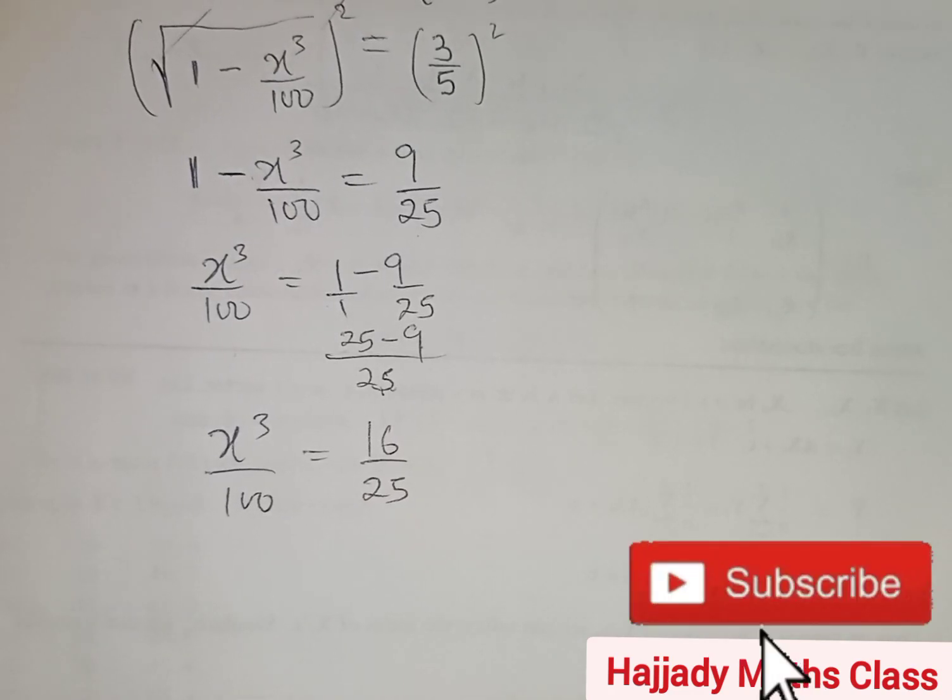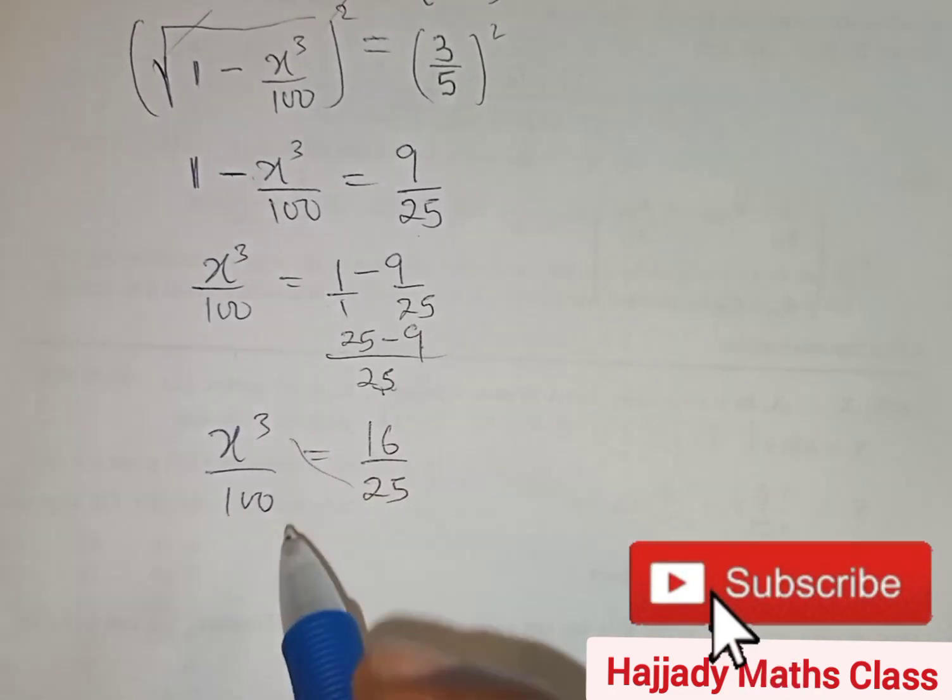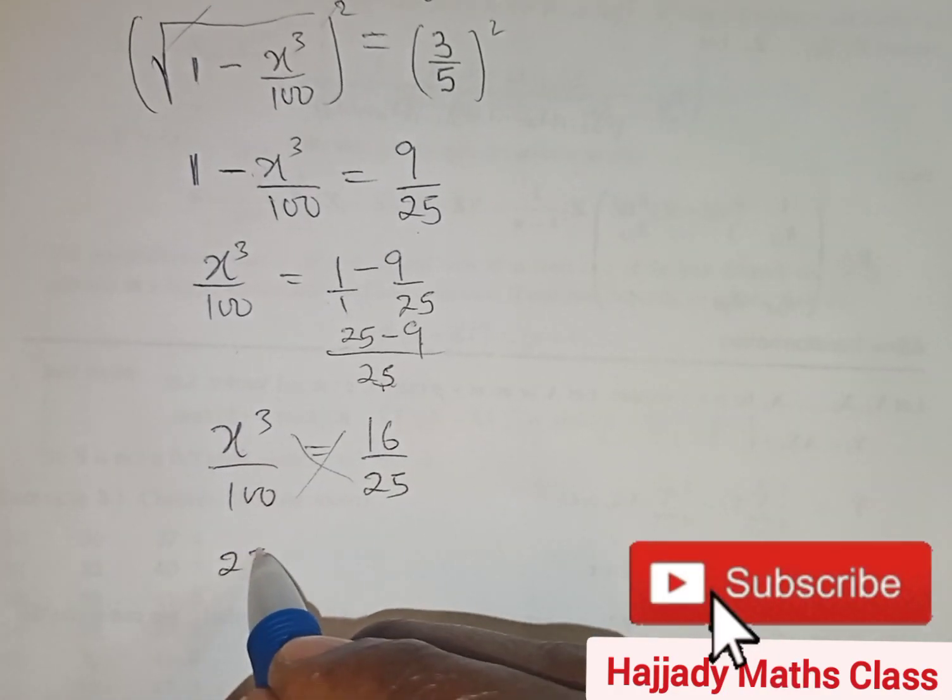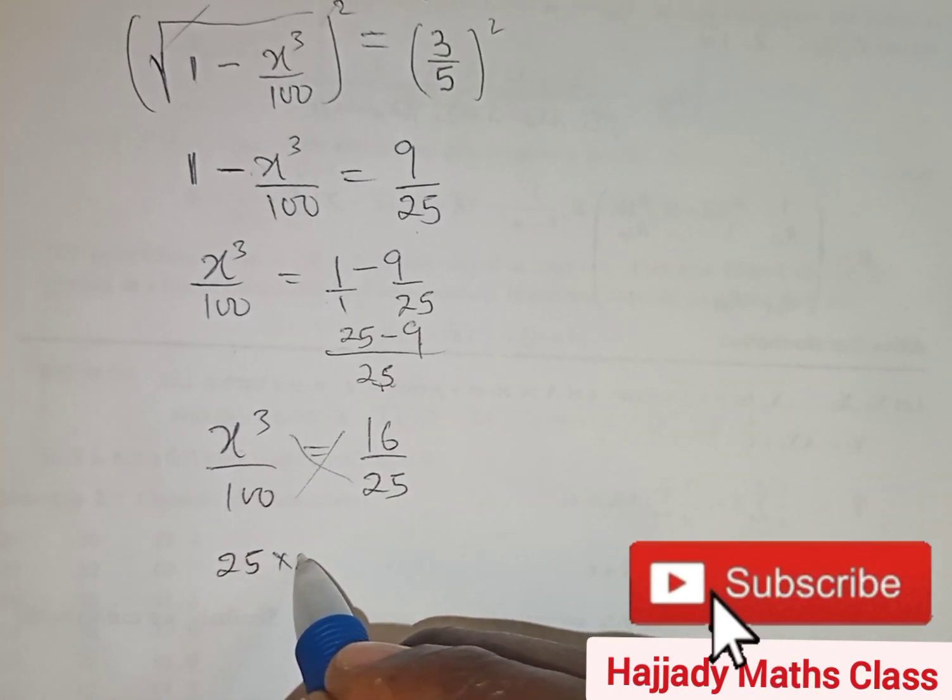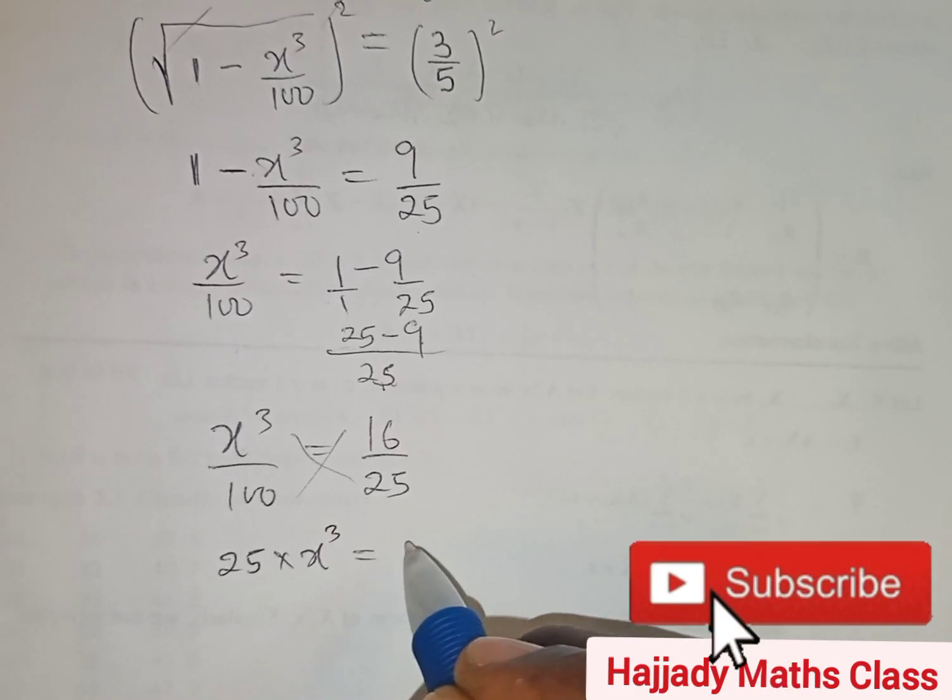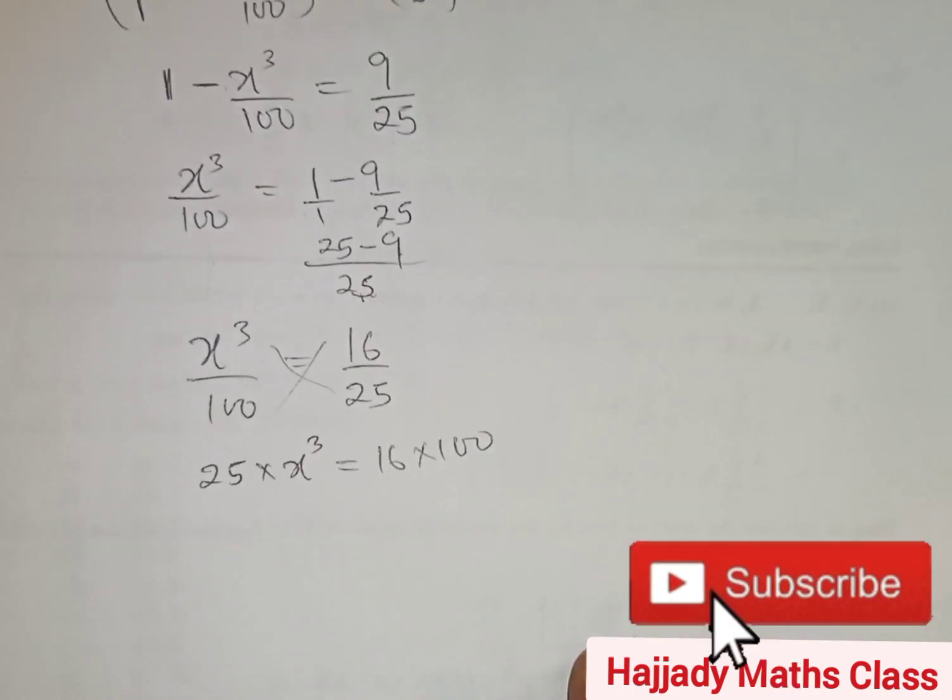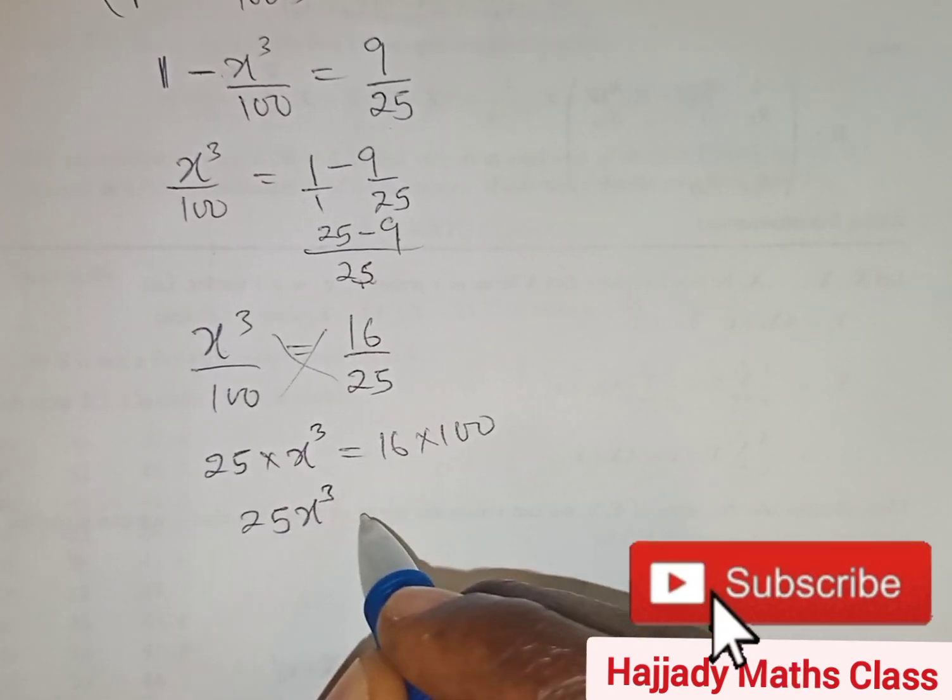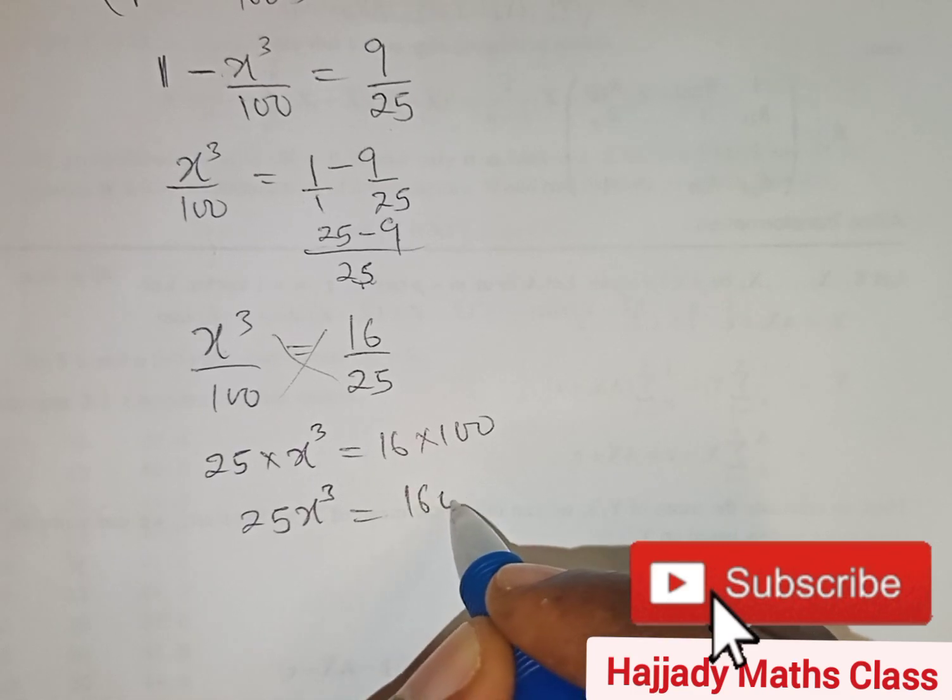So with this, we are cross multiplying. We have 25 times x raised to power 3 equals 16 times 100. So with this, we have 25x raised to power 3 equals 1600.